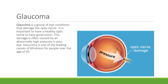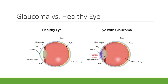Glaucoma is a group of eye conditions that damage the optic nerve. It's important to have a healthy optic nerve for good vision, and this damage is often caused by an abnormally high pressure in your eye. Glaucoma is one of the leading causes of blindness for people over the age of 60, which is why it's so important to have annual checkups with an ophthalmologist. In an eye with glaucoma, you can see an outward movement indicating pressure inside the eyeball. Remember, glaucoma develops in the anterior chamber of the anterior cavity of the eyeball.